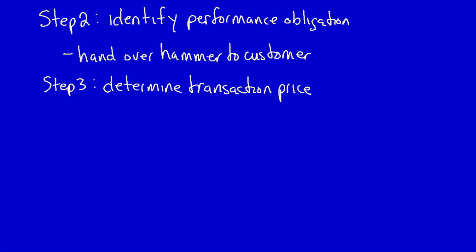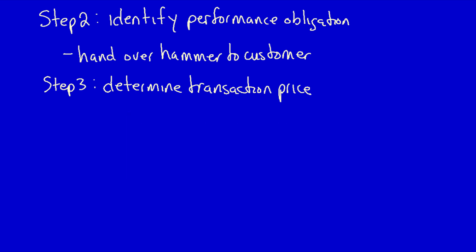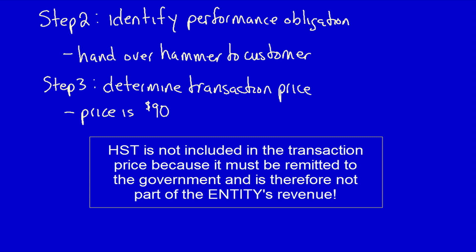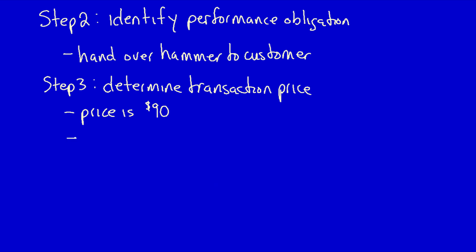We question whether the transaction price will include or exclude the HST — it's going to exclude the HST. Why? Because we're determining the contract price for the hardware store: the revenue they will be able to keep as their own. When stores charge HST, they act as an agent for the government and must remit that additional amount back to the government. Therefore it cannot be claimed as revenue. To put it succinctly, the transaction price can never include sales taxes.